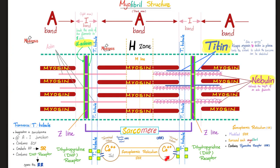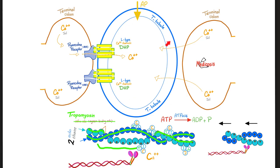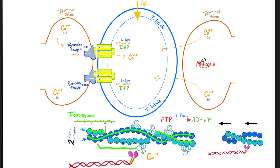Zooming in on these structures: here is the T-tubule, a terminal cistern on each side — that's your sarcoplasmic reticulum on both sides. The action potential rushes into the T-tubule, which opens the doors for calcium. Calcium leaves the prison through the ryanodine receptor and then the dihydropyridine calcium channel. Calcium travels up the T-tubule until it finds Troponin C. Then Troponin T removes tropomyosin, exposing the active sites — contraction.